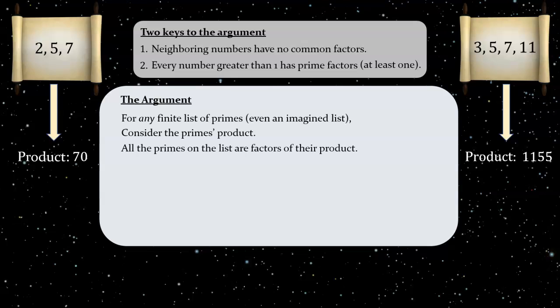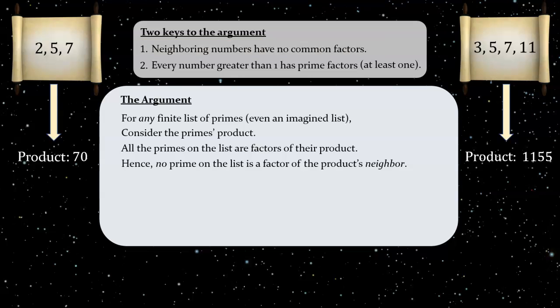That's how we define the product in the first place. I mention it only because we can use it to deduce something vital for the larger argument. All the primes on the list are factors of their product. Hence, no prime on the list is a factor of the product's neighbor. This follows directly from our first key fact. Neighboring numbers have no common factors.